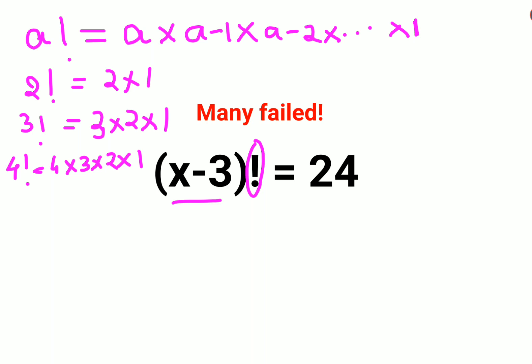I hope you have understood how it works. Now the problem here is we have a variable inside the factorial. In this case, we will focus on the RHS and find whose factorial gives you the value of 24.